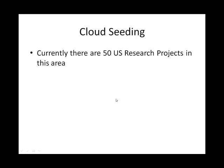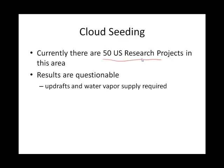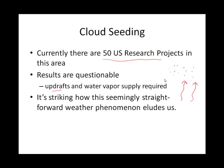As the textbook notes, research in this area is ongoing and results are mixed. The updraft — the vertical flow of air upward — is something we generally can't control, and the amount of water vapor present can't be controlled either. Both of those factors affect the cloud seeding process.